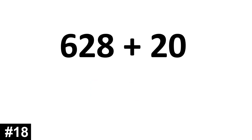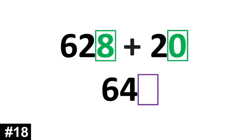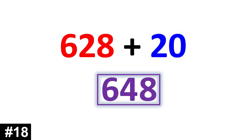628 plus 20. 62 tens plus 2 tens is 64 tens. We add the ones, which gives us 8. 648.